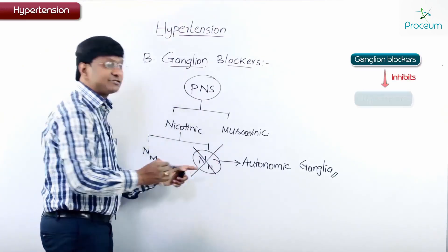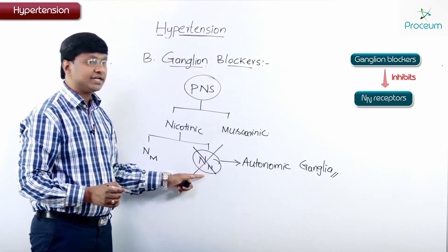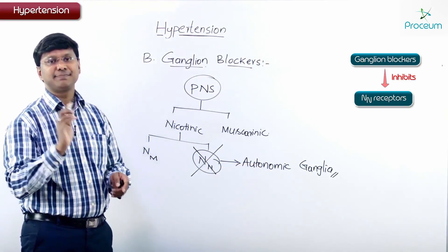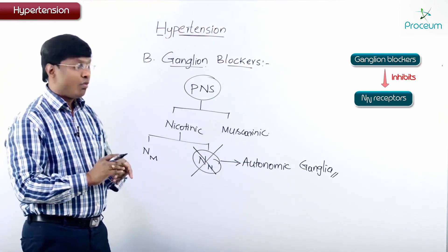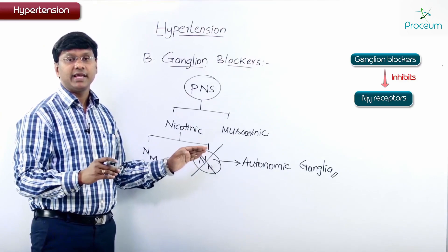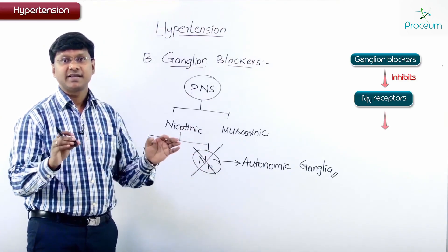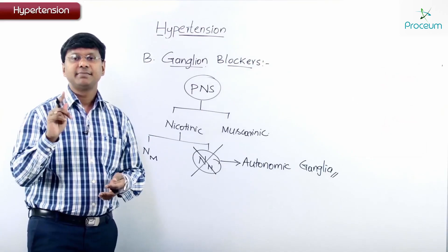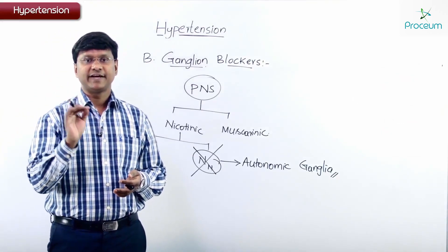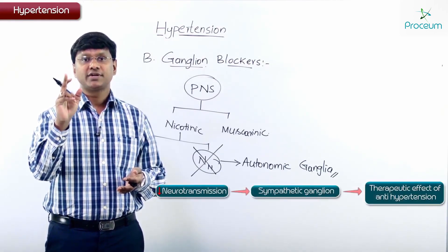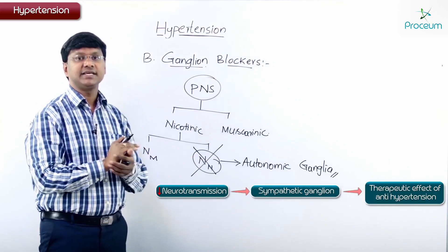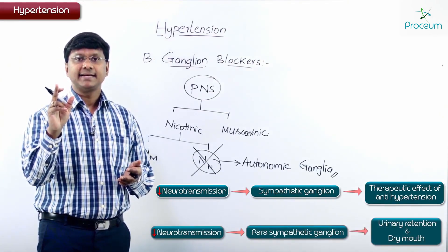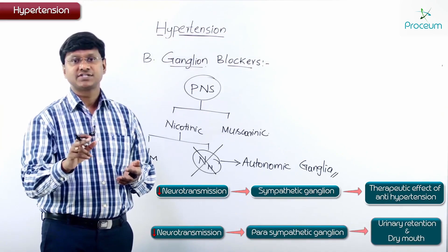Ganglion blockers inhibit the NN type of nicotinic receptors that are present on the autonomic ganglia of both the sympathetic and parasympathetic nervous system. Once these NN receptors are inhibited, the therapeutic effect of antihypertension occurs. The therapeutic effect is due to decreased neurotransmission through the sympathetic ganglia, whereas decreased transmission through parasympathetic ganglia is responsible for adverse effects like urinary retention and dry mouth.